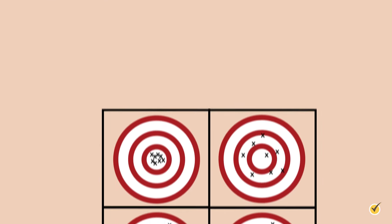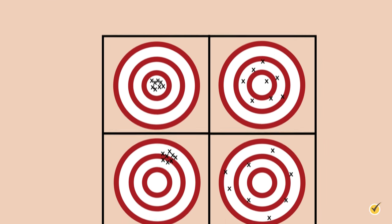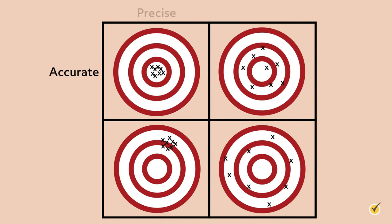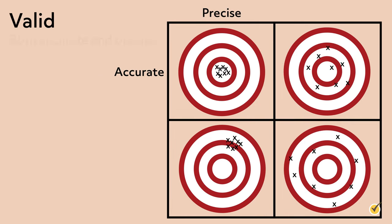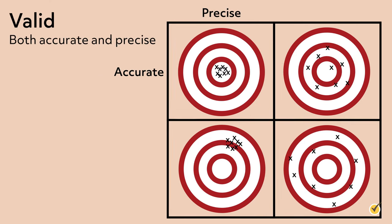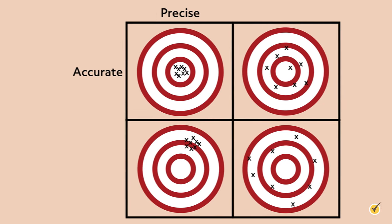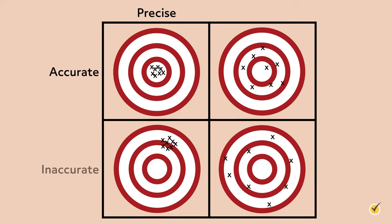Since accuracy and precision mean two different things, measurements can be both accurate and precise. Measuring systems are considered valid if they are both accurate and precise. On the other hand, measurements can be precise without being accurate, and they can be accurate without being precise. Consider these targets. The upper left target shows measurements that are accurate and precise — all measurements are consistent and at the bullseye. In the upper right target, we can see measurements that are accurate but imprecise — they are not consistent, but they are all close to the bullseye.